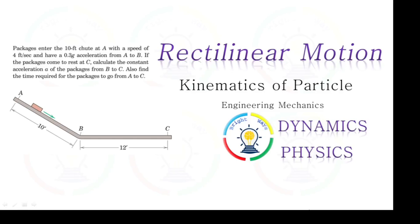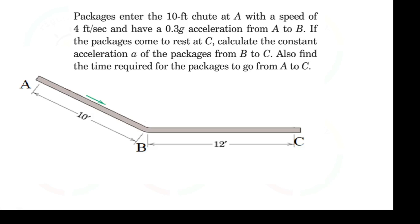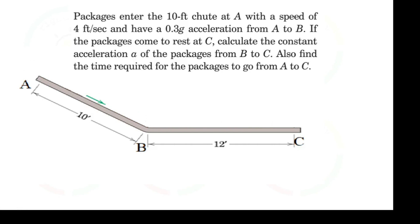Hello guys. Today in this video we'll discuss rectilinear motion for kinematics of a particle. This example will illustrate the mechanism of how a particle passes through different journeys. A package enters at point A with a speed of 4 feet per second and has a 0.3g acceleration from A to B. If the package comes to rest at C, calculate the constant acceleration of the package from position B to position C, and find the time required for the package to go from A to C.